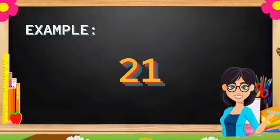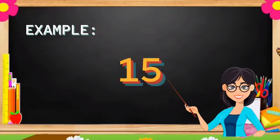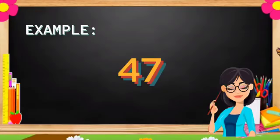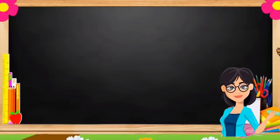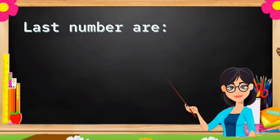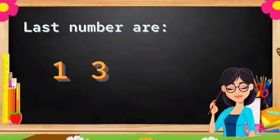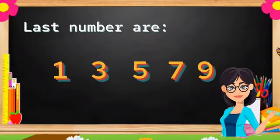For example, 21, 53, 15, 47, 19. Like the even numbers, take a look at the last digit. The last numbers are 1, 3, 5, 7, and 9.